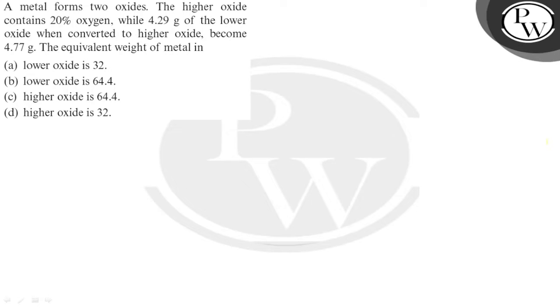Hello, let us see the question. A metal forms two oxides. The higher oxide contains 20% oxygen while 4.29 gram of the lower oxide when converted to higher oxide become 4.77 gram.